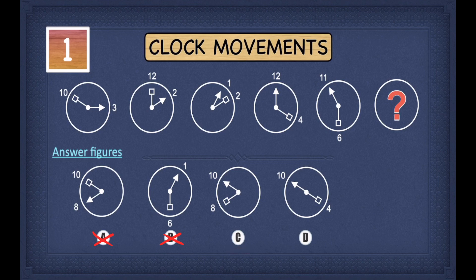In C, the arrow is pointing towards ten. Since it's pointing towards ten, we can leave C as it is. In D, the arrow is also pointing towards ten. So we can leave C and D as it is, and we have crossed out A and B. So we are left with two options.